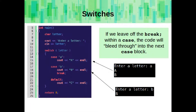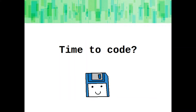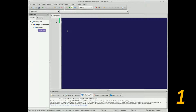If we leave off the break within a case, the code will bleed through into the next case block, as you can see here. Where if the user chooses A, it executes both A and B, whereas if they choose B, it only executes B. Okay, let's practice branching.